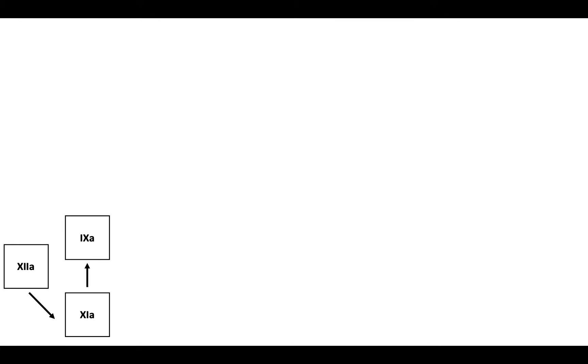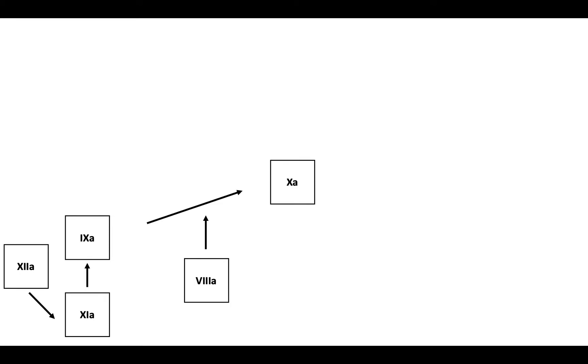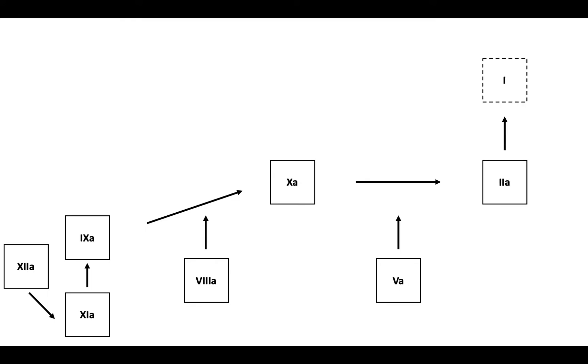Let's take a look at a simplified version of the coagulation cascade, starting with the intrinsic pathway. Factor 12a activates factor 11a, which activates 9a. Together with its cofactor 8a, 9a activates factor 10 to 10a. 10a then acts in the presence of its cofactor 5a to convert prothrombin to thrombin, and thrombin converts fibrinogen to fibrin.